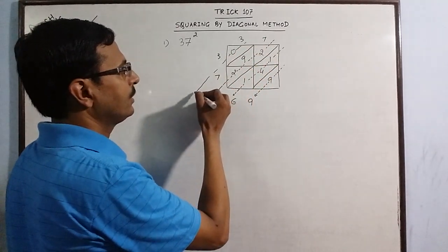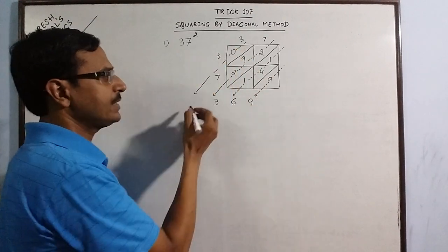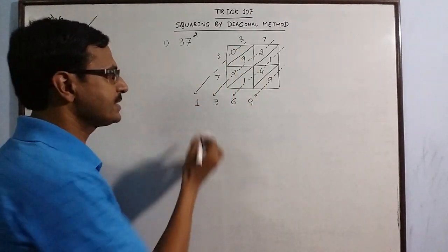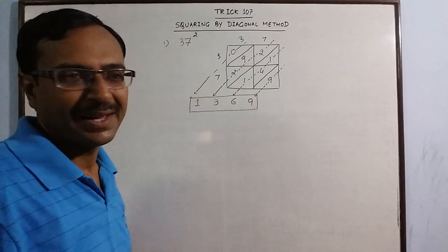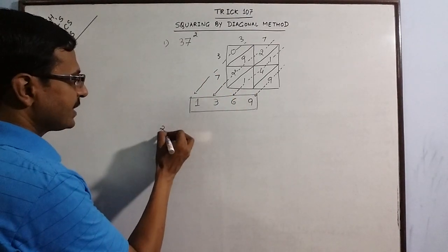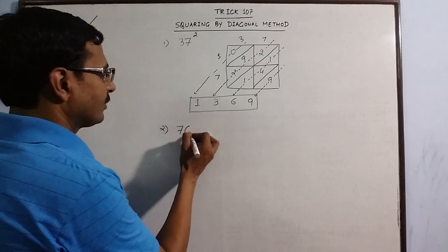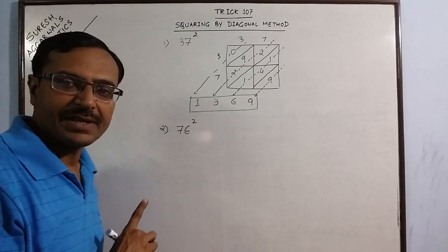So you have to write 0 and 1 was carried. So 1369 is the square of 37. Understand the method by using one more example. So we have 76 square.